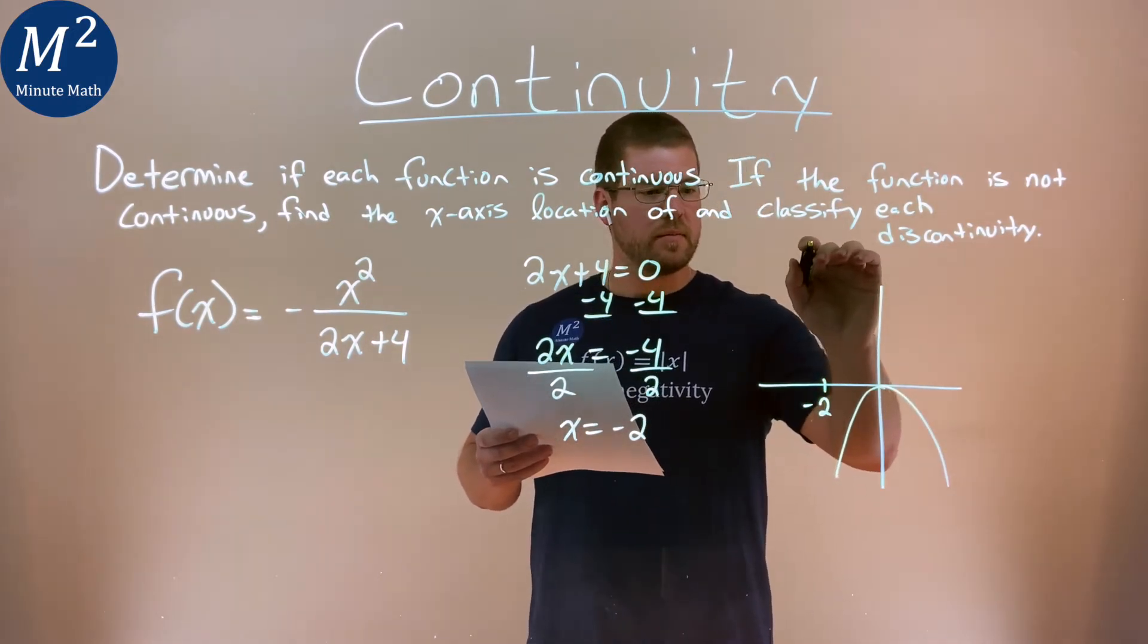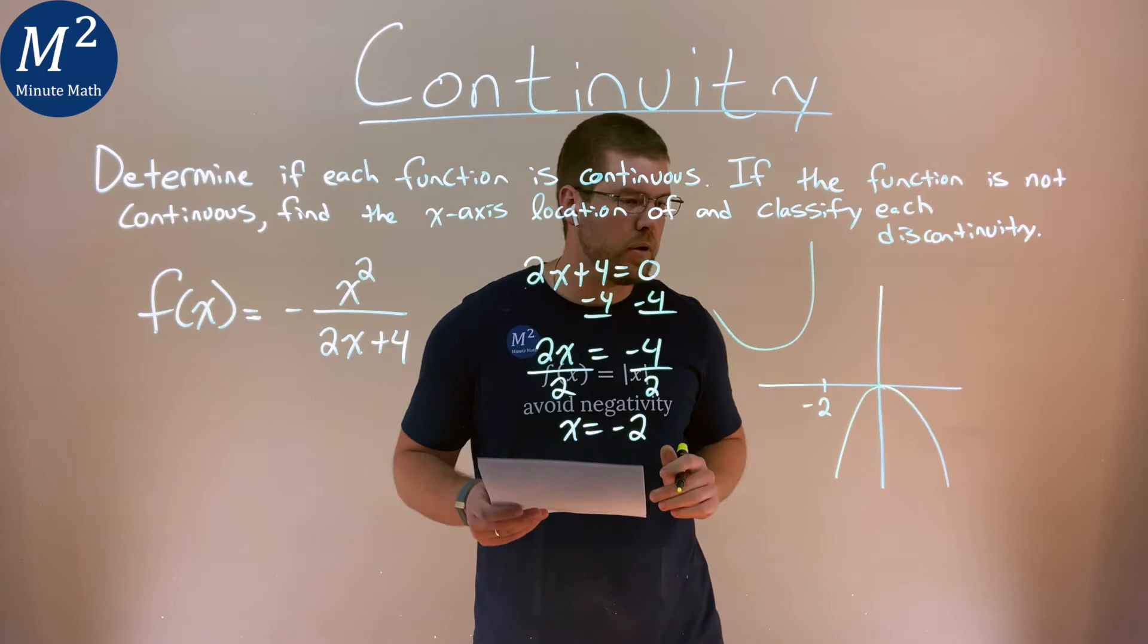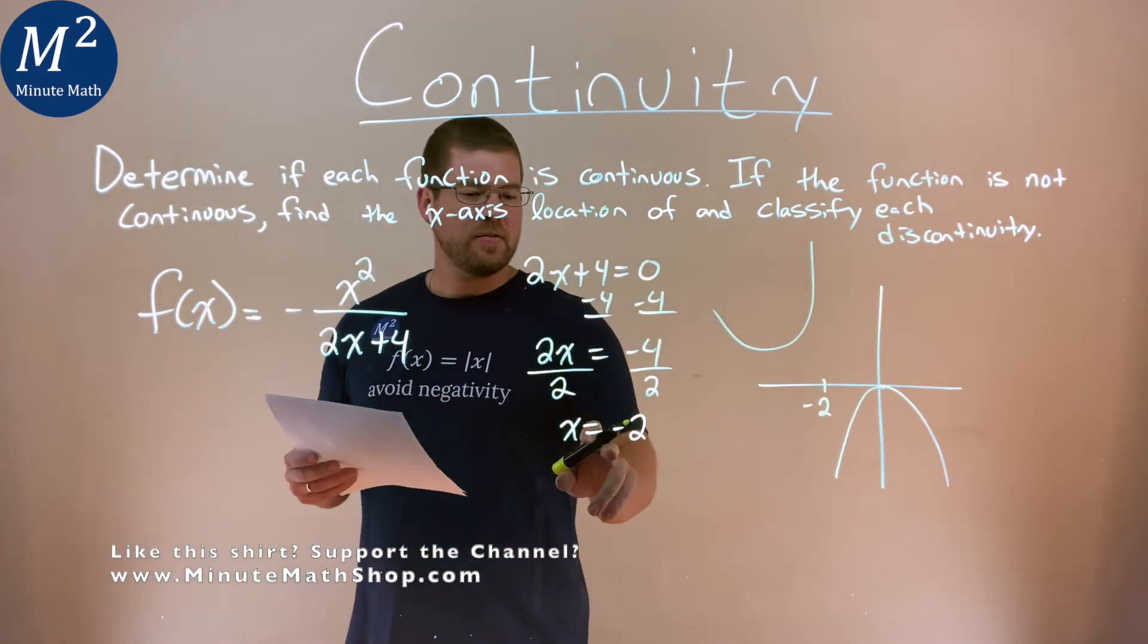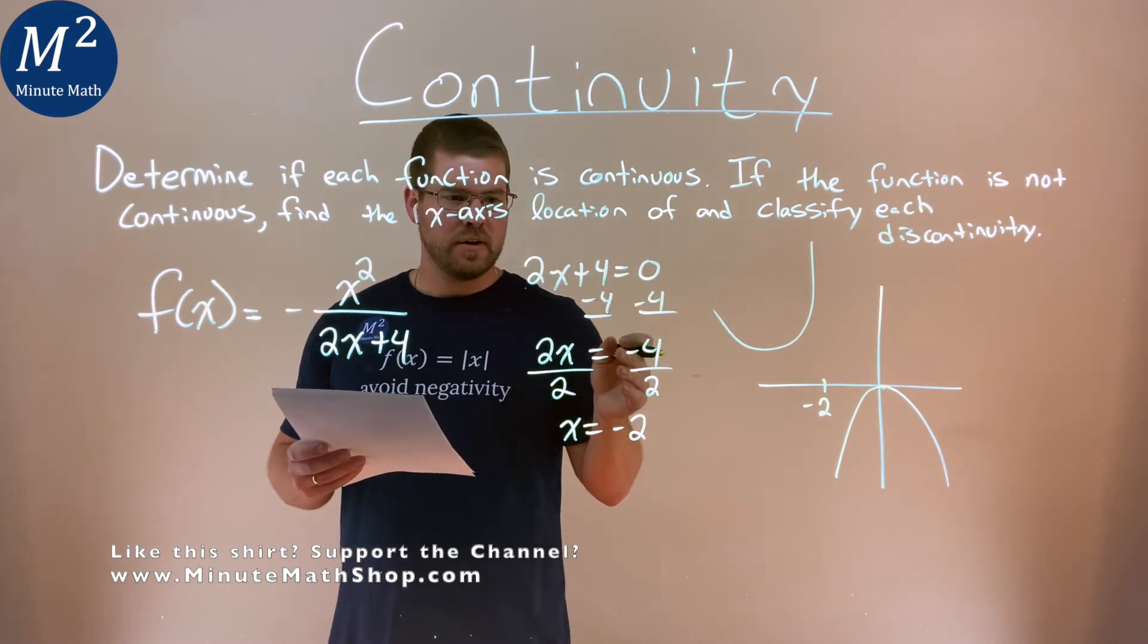And then it does something like this. Something like that, more or less, right? These are going to be the x and y axes. And so this here at negative 2 is where it's not continuous, right? Right there at negative 2.